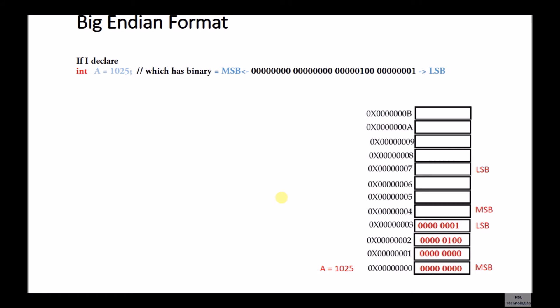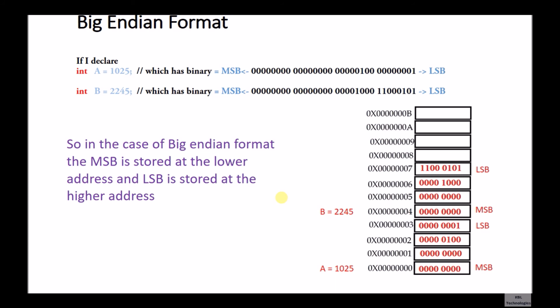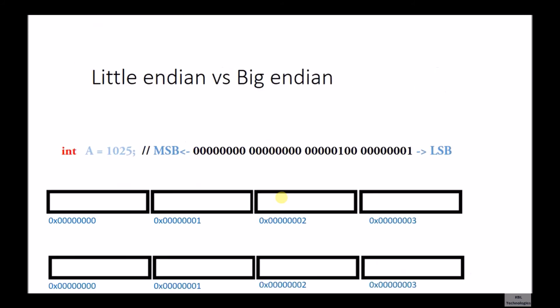That's why this format is called the Big Endian format. Taking the same example, b equals 2245: in this case the LSB is stored at the higher address. So in the case of Big Endian format, the MSB is stored at the lower address and the LSB is stored at the higher address.